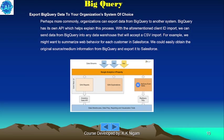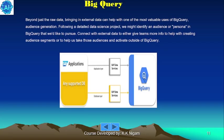You can also export BigQuery data to your organization's system of choice. Organizations can export data from BigQuery to another system using BigQuery's own API. With the client ID import mentioned earlier, you can send data from BigQuery into any data warehouse that will accept a CSV import. For example, you might want to summarize web behavior for each customer in Salesforce — easily obtaining source and medium information from BigQuery and exporting it to Salesforce. Beyond raw data, bringing in external data can help with one of the most valuable uses of BigQuery: audience generation.